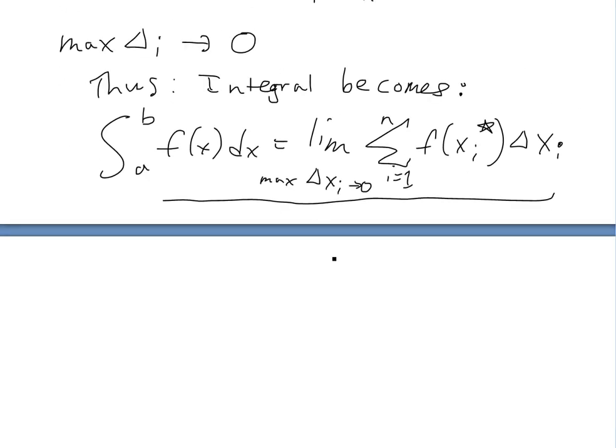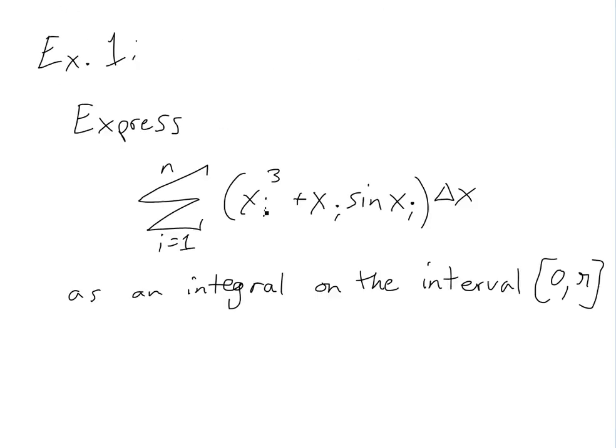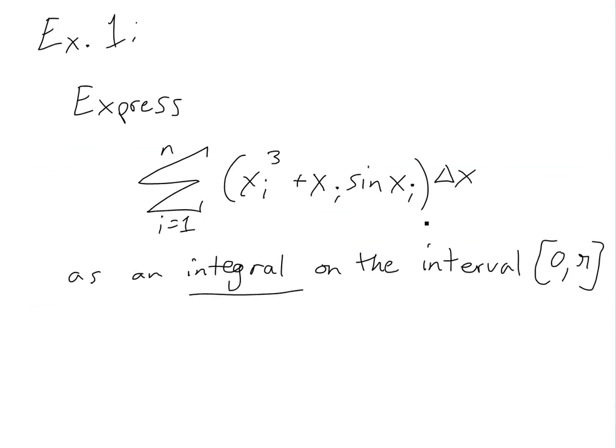And we'll not go through that, here, but I might do an example later on, but anyways, I'll just do a quick example, here. Basically, this one says, express this summation x_i^3 + x_i sin(x_i) delta x, as an integral on interval from 0 to π, here.